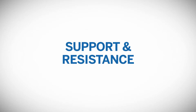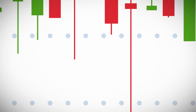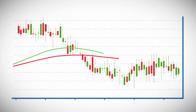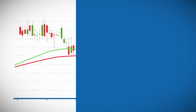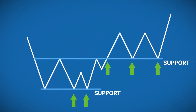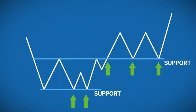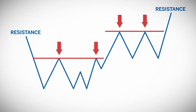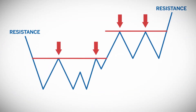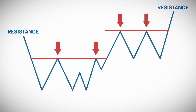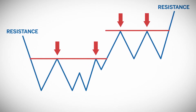Support and resistance are common terms that traders use to describe levels where price is more likely to stop moving in one direction or change direction. Support refers to levels where price might reverse and move higher, or it can be a level that slows the momentum of price moving down. Resistance refers to levels where price might reverse and move lower, or it can be a level that slows the momentum of price moving up.